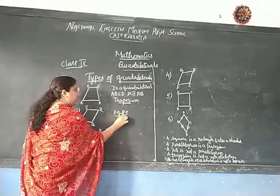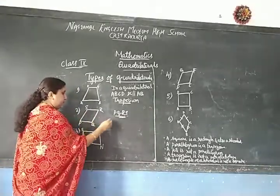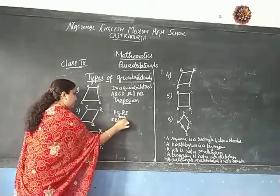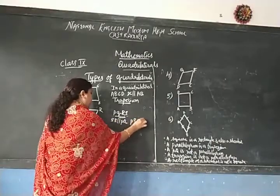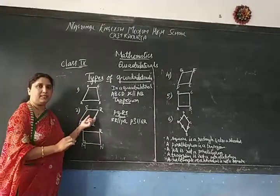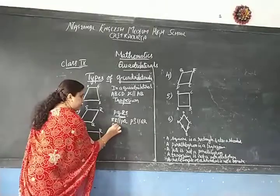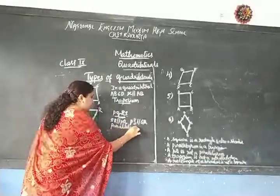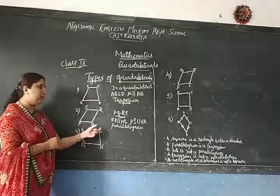The second one is the quadrilateral PQRS. In this quadrilateral PQRS, we can see both pairs: SR is parallel to PQ and PS is parallel to QR. Both pairs of opposite sides are parallel. This is called as the parallelogram.